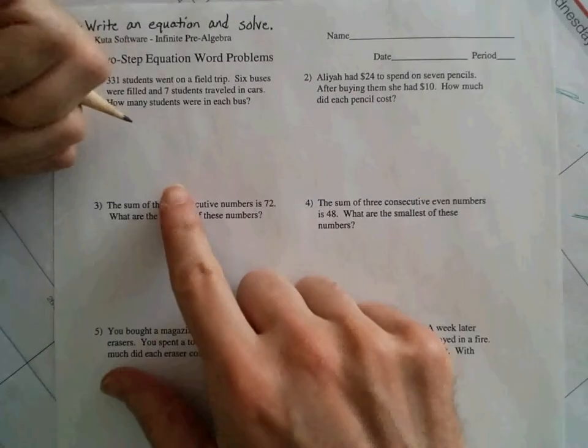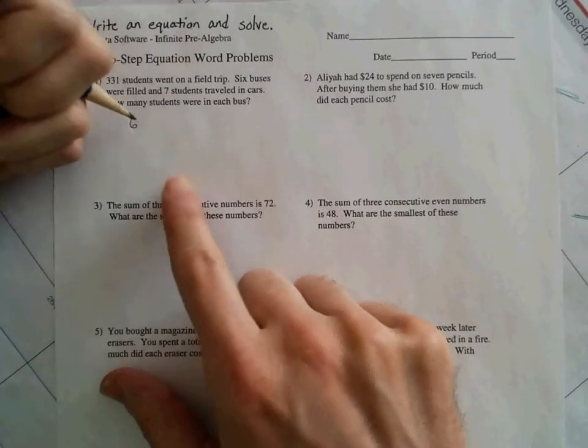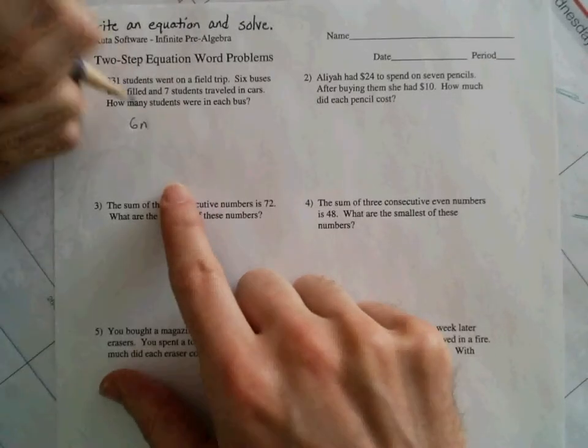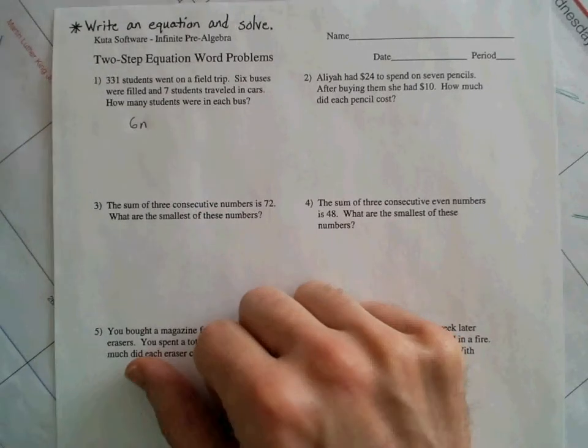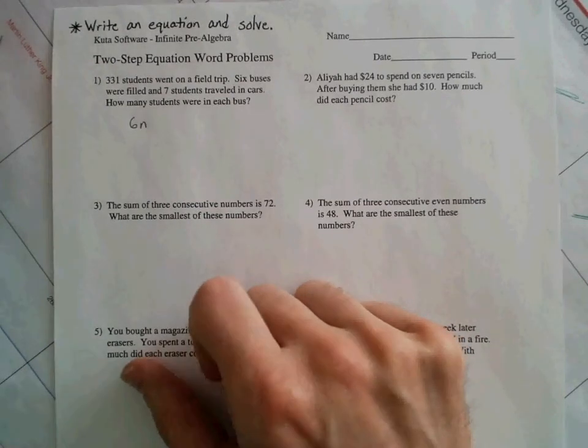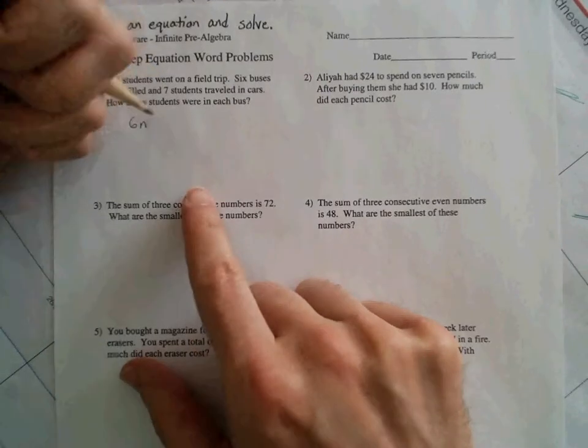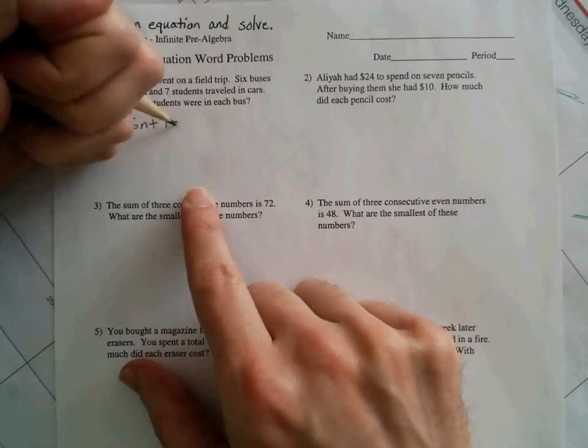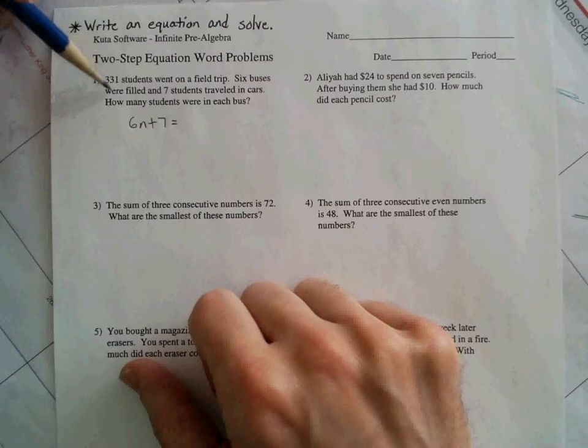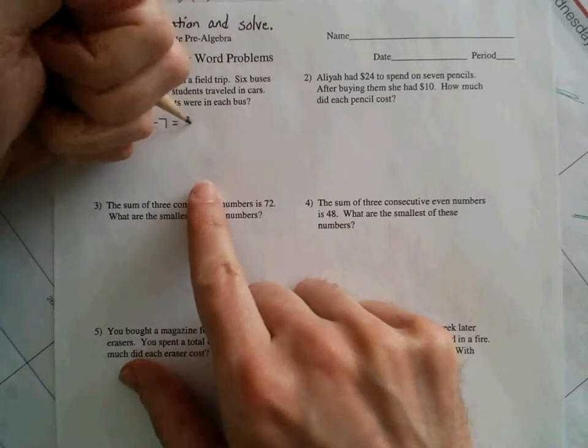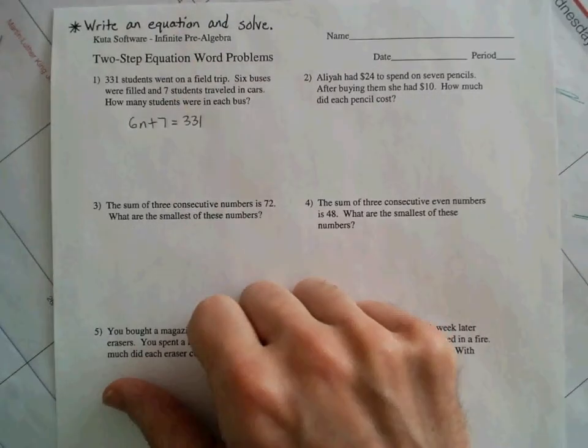You can come back in and start to think about how you can set this up here. We've got 6 buses, and that's going to be what we're looking for, how many students are in each bus. So you can say 6 times, and I'm going to use n for the number of students. It doesn't matter what letter you use. So 6 times the amount of students in each bus, plus the 7 students that were in the car. And all that should give you the total on the field trip, which was 331.